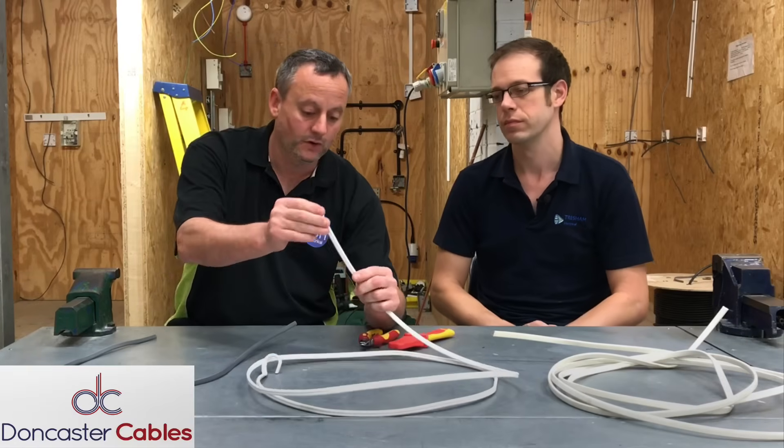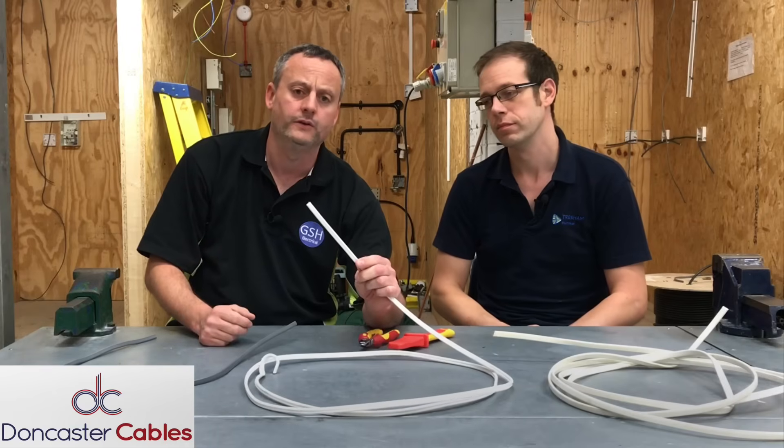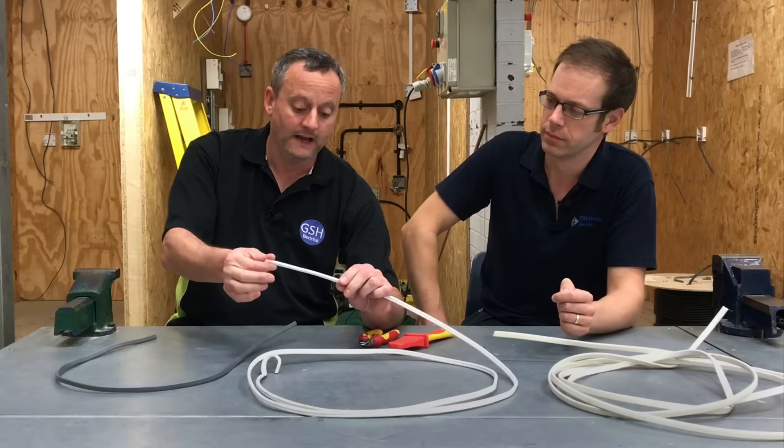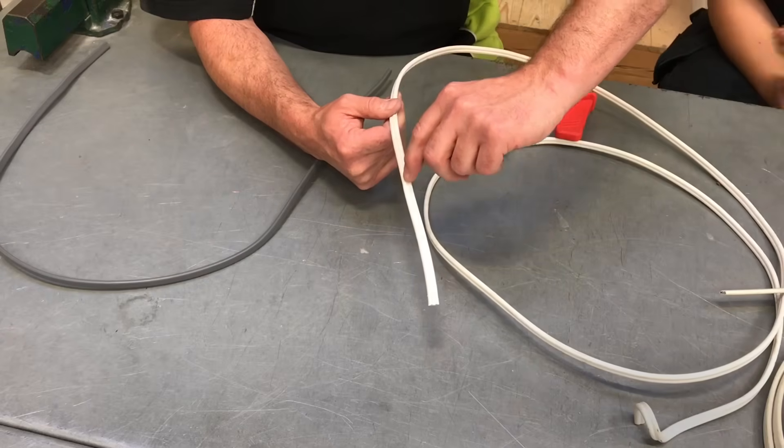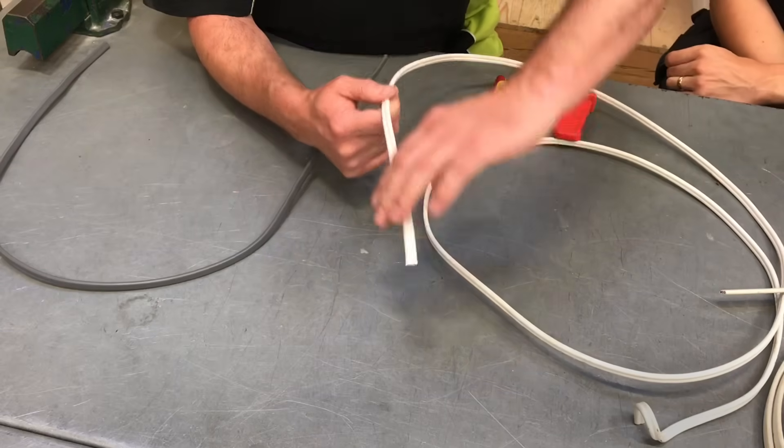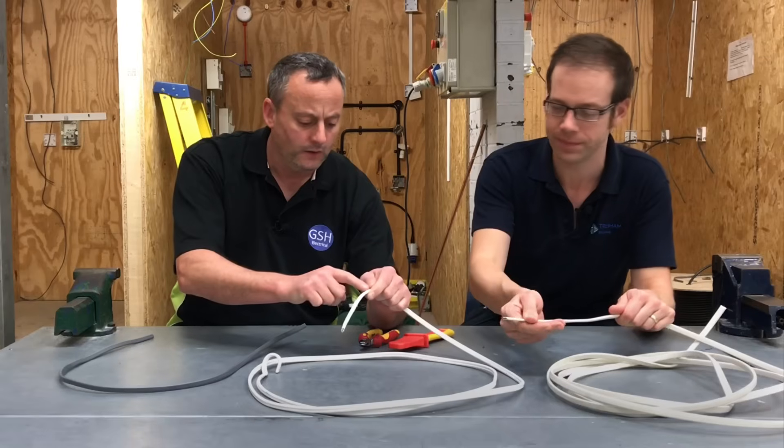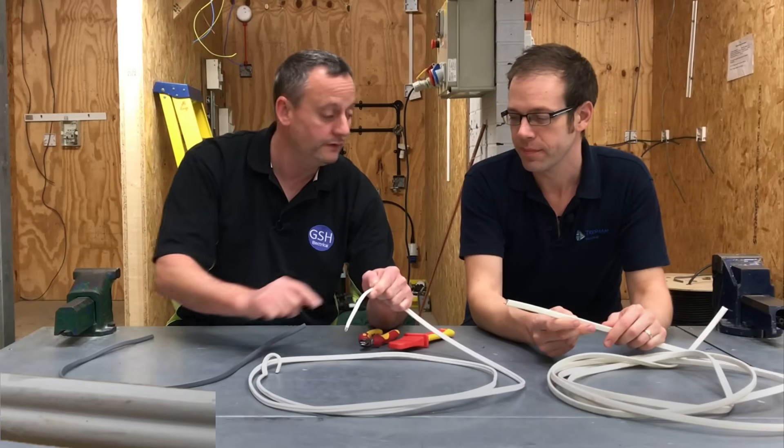So Doncaster Cables, kindly when we went up there and shot a video with eFix, and check out eFix.co.uk for that video and article, allowed us to take away their cable of low smoke and no halogen. And we can see, Joe, that it's actually got a groove down the centre. The one you've got there hasn't. No, this is by a different manufacturer. No groove.